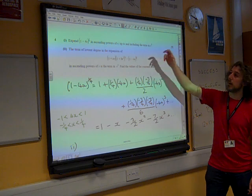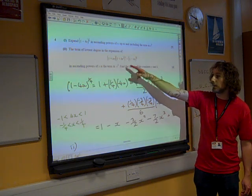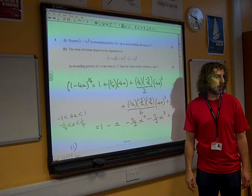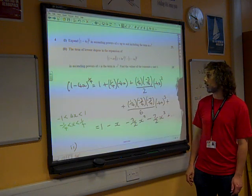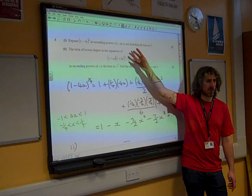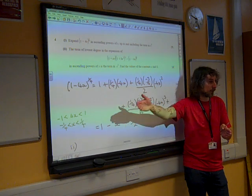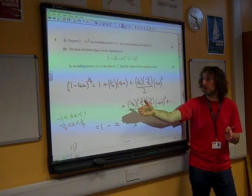Find the lowest degree. The term of lowest degree in the expansion there, in ascending powers of x, is the term in x cubed. Find the values of the constants a and b. So, hang on. That means that when you multiply all this out, you've no number term, you've no x term, you've no x squared term. The first term is x cubed.